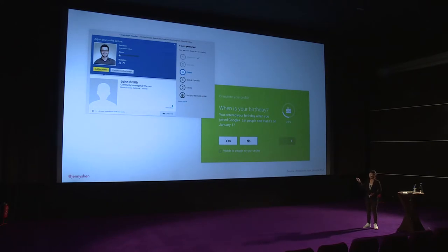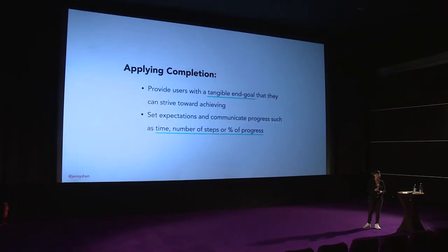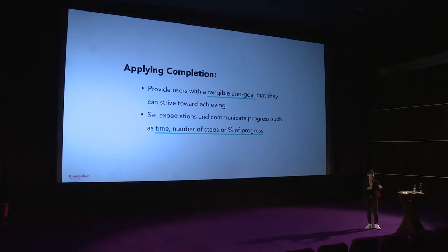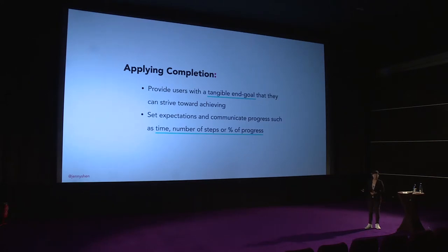Google Plus uses a percentage and a progress bar to tell the user: you're 25% of the way to your profile — do you want to get to 100%? To apply completion, provide a tangible end goal, and set expectations by communicating progress — such as time left to complete, number of steps remaining, or percentage of progress.